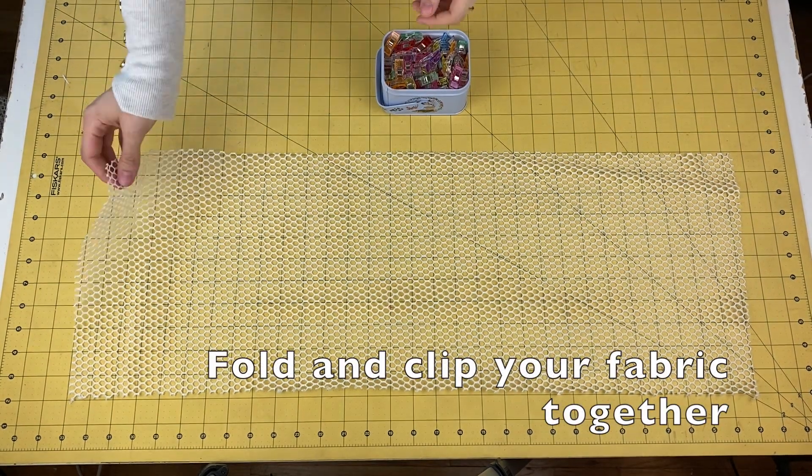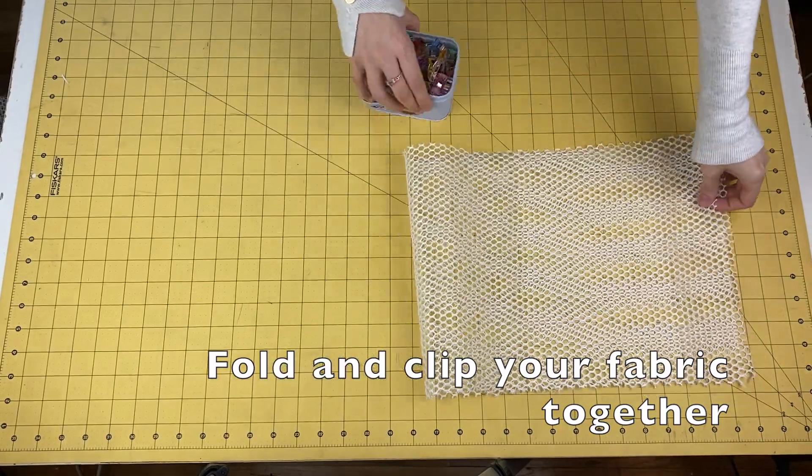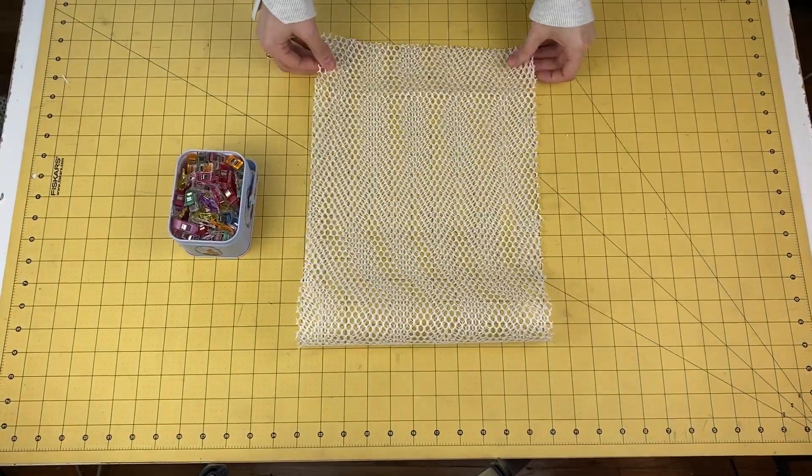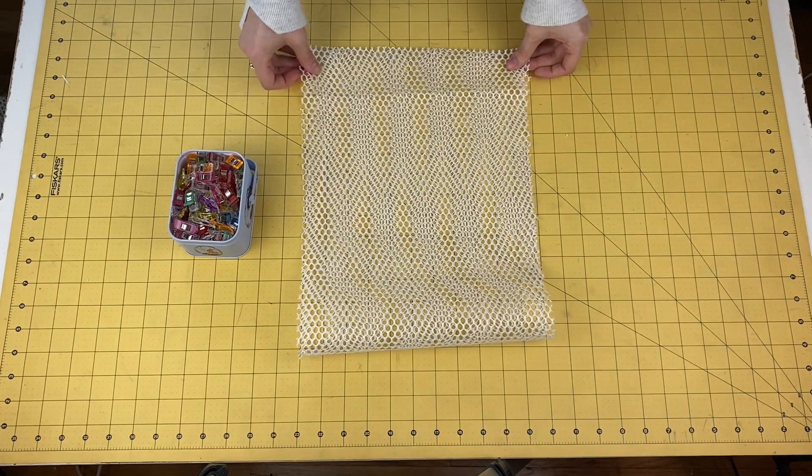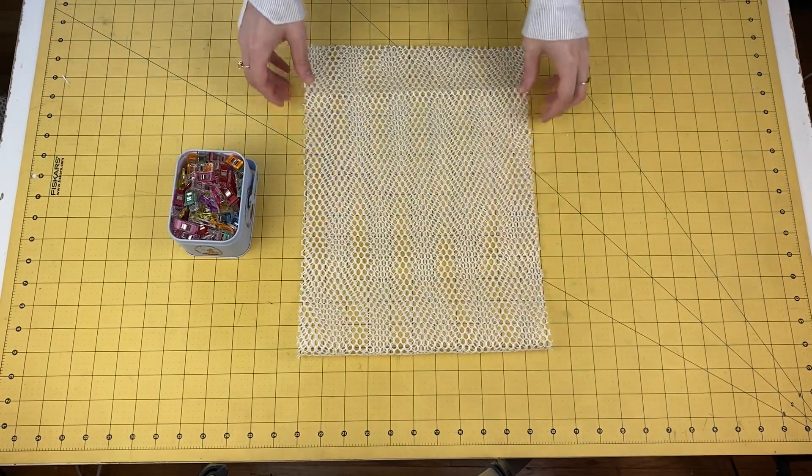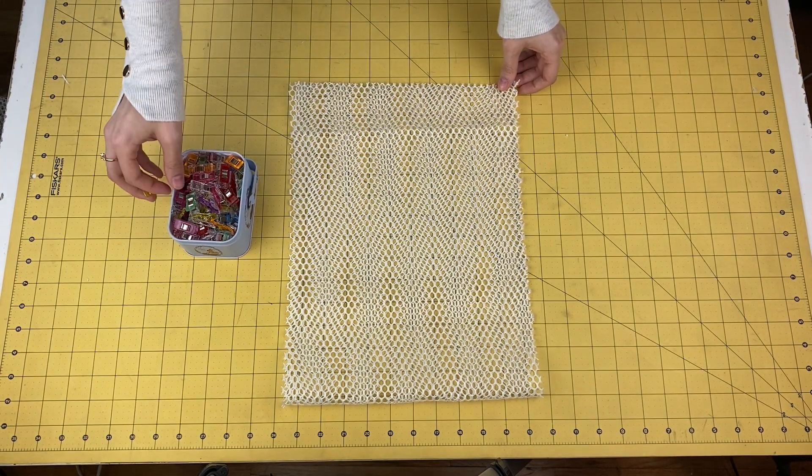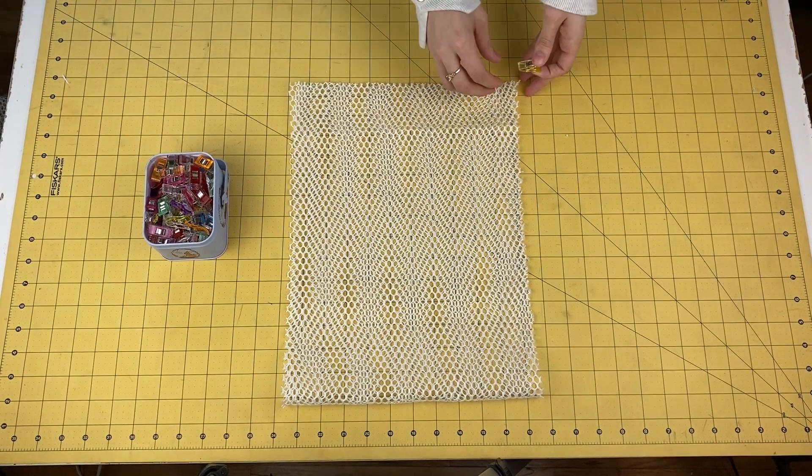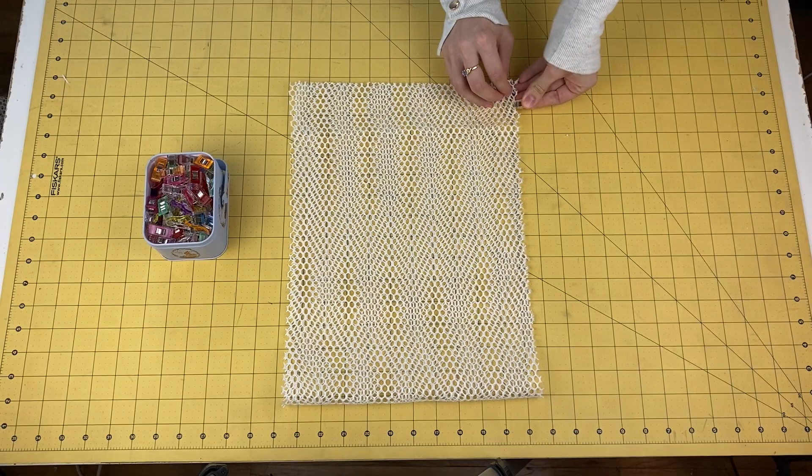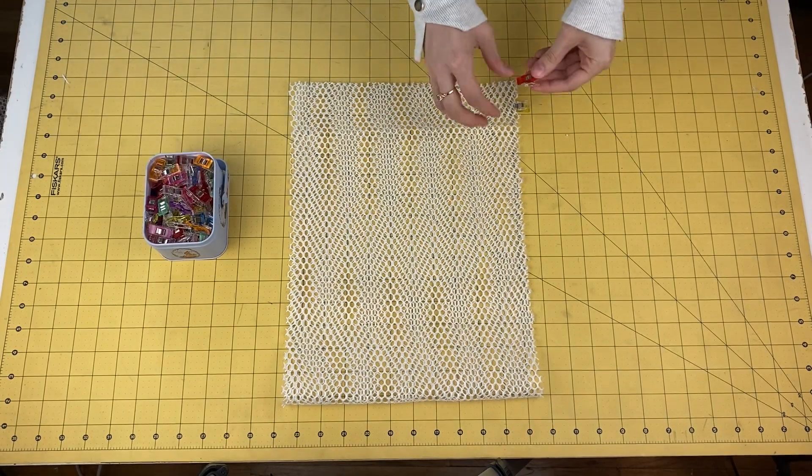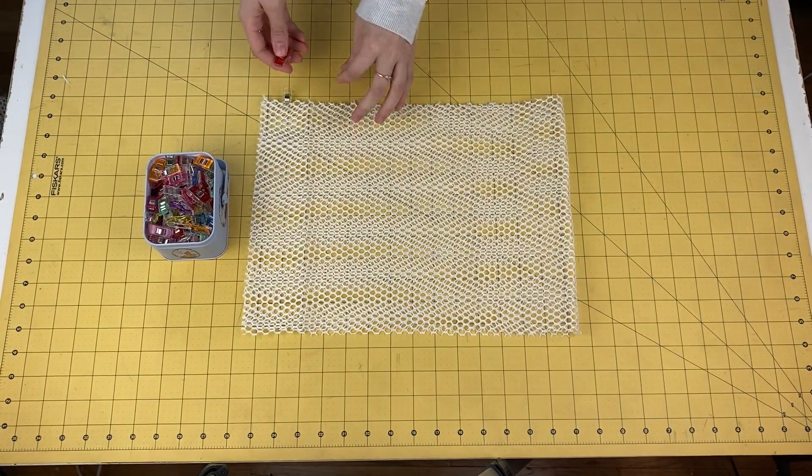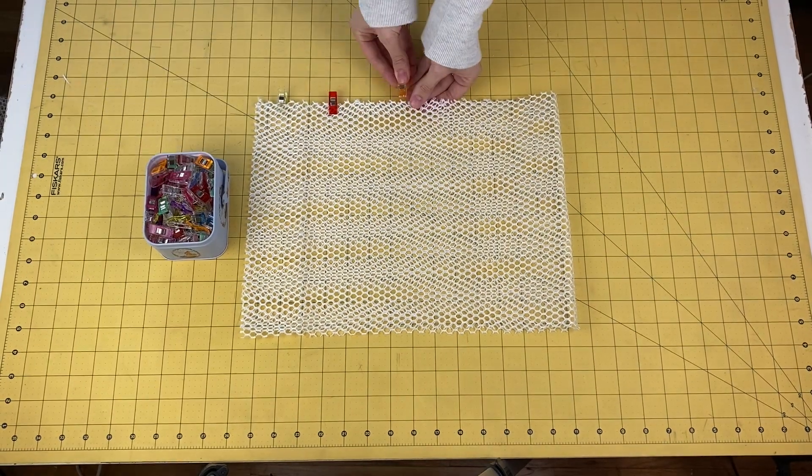Fold the mesh rectangle in half so that the 32 inch length folds in half to create two layers of fabric that equals 16 inches in length. Using fabric clips, clip together the two pieces of fabric along the sides of the bag to hold them in place.